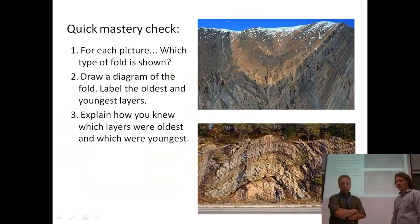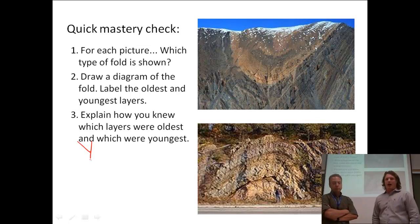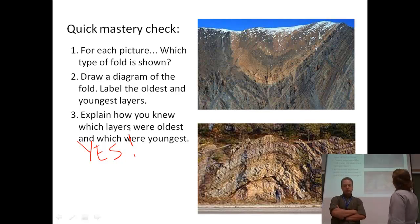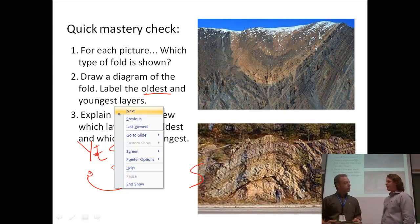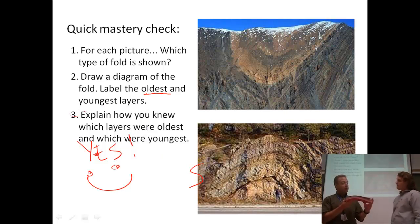Now we're ready for our quick mastery check. For each of these pictures, you want to write down which type of fold is shown there. They should remember like smiles and the letter A. And then you want to draw a diagram of the fold. Label the oldest and the youngest layers. So where would you find those oldest layers and the youngest layers? And then finally, explain how you knew which layers were oldest and which layers were youngest. So justify your answer there. We didn't actually show them with the anticline where the oldest and youngest. I think they can do it. I got faith in them.